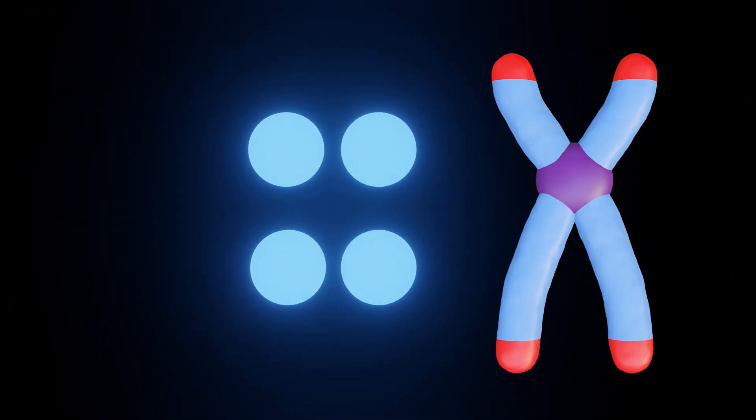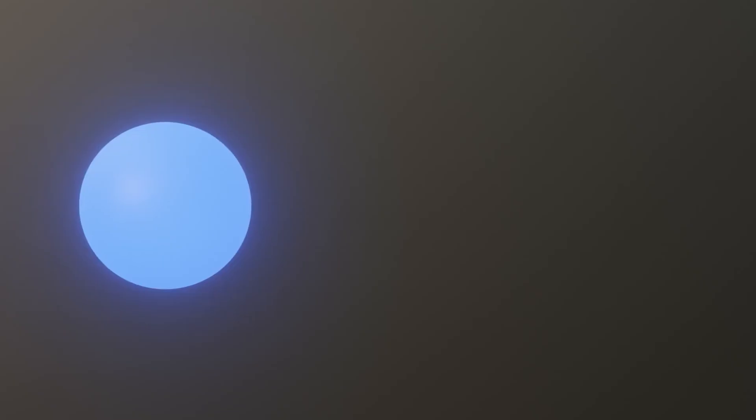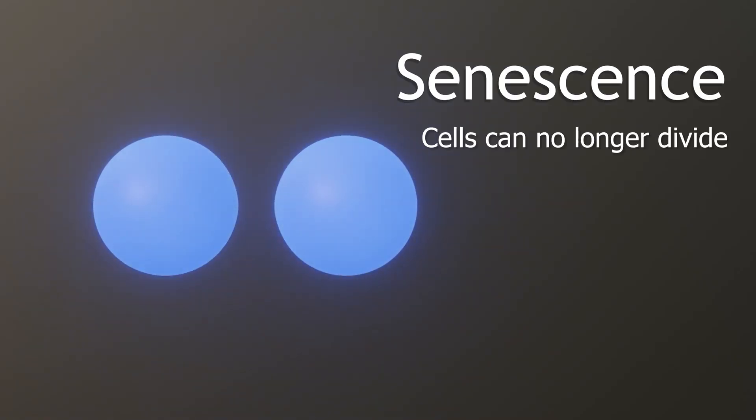So each time our cells divide, our telomeres become shorter and shorter before they can no longer protect the chromosomes and their DNA unravels. When this happens, our cells will reach a state of senescence, in which cells can no longer divide.